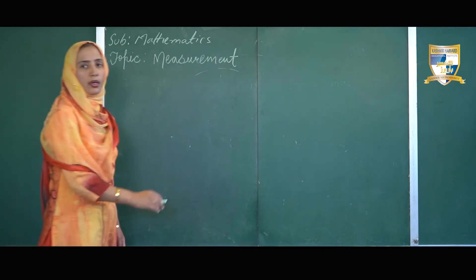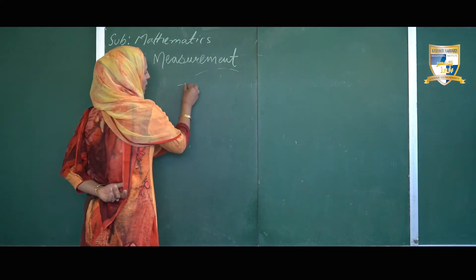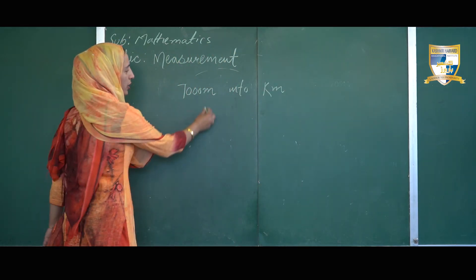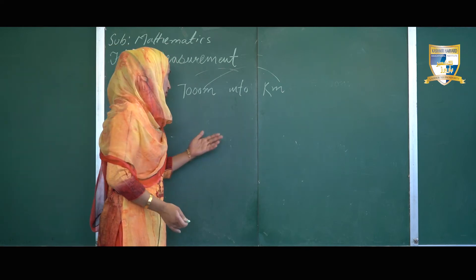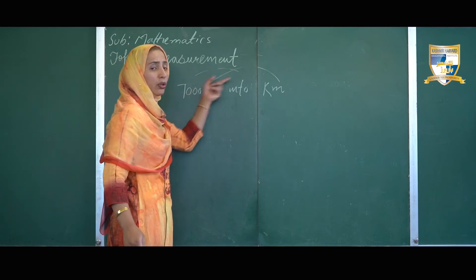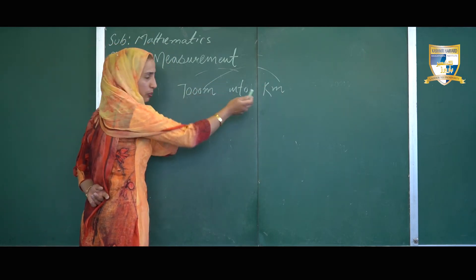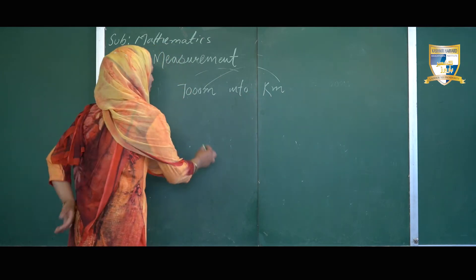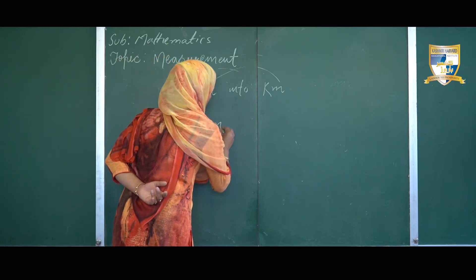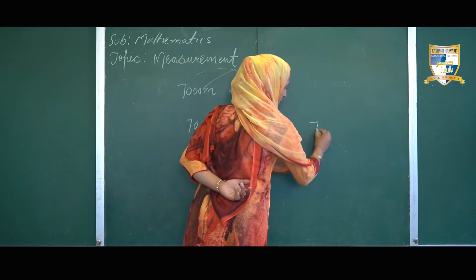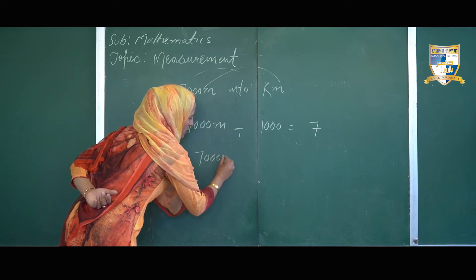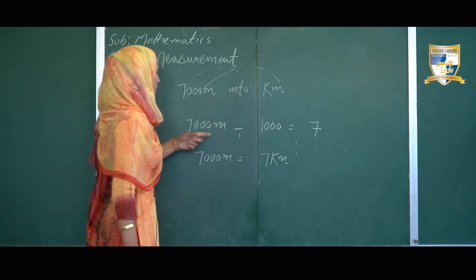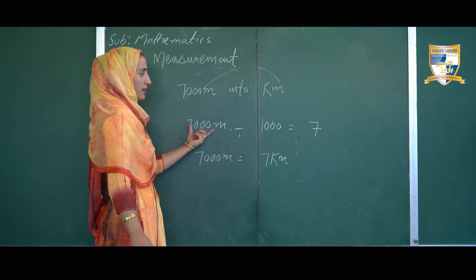Let us go for the conversion of meters to kilometers. I will take an example: convert 7000 meters into kilometers. Here we have to convert a smaller unit into a higher one, so we will go for division. We divide 7000 meters by 1000, which equals 7. So 7000 meters is equal to 7 kilometers. We have converted a smaller unit into the higher one.